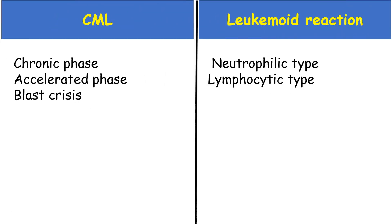Chronic myeloid leukemia comprises three phases: chronic phase, accelerated phase, and blast crisis. Whereas leukemoid reaction can be divided into neutrophilic type or lymphocytic type according to the predominant cell present.